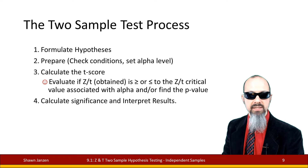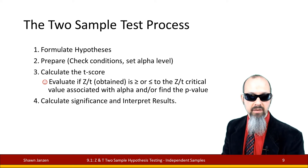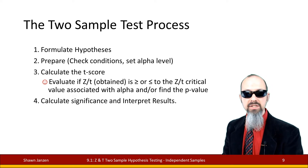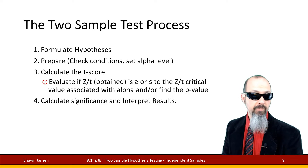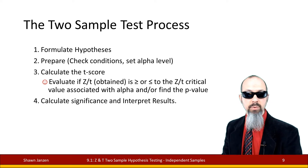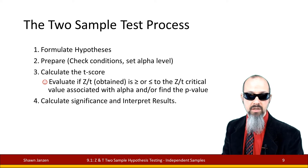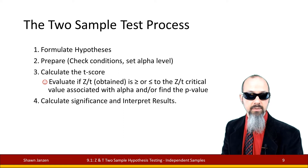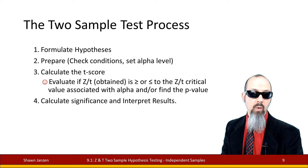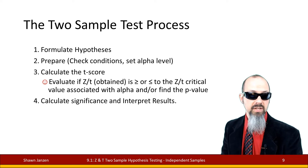The two-sample test process is very similar to the inferential testing we do more broadly, just specific for Z's and T's. We start by formulating our hypotheses, then prepare and check the conditions — do we meet all our test assumptions? We set an alpha level at the beginning of the study, not once we start calculating p-values. Then we calculate our t-score, figure out if the obtained Z or T is greater than or less than the critical values associated with our alpha, or find the p-value and compare it to alpha, then calculate significance and interpret results.